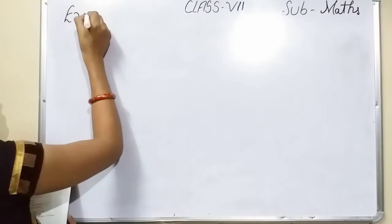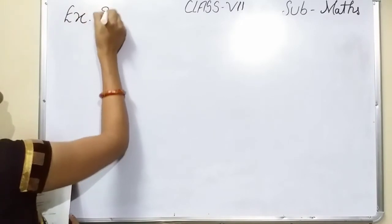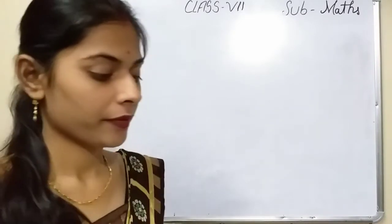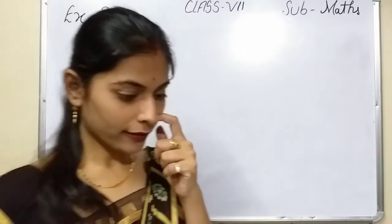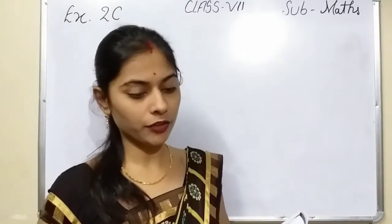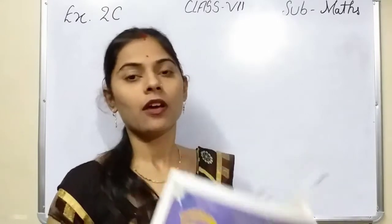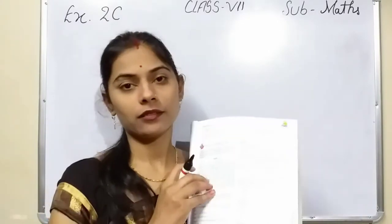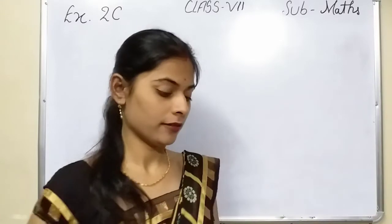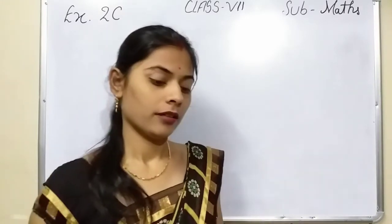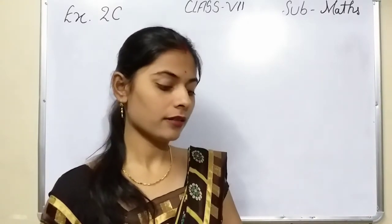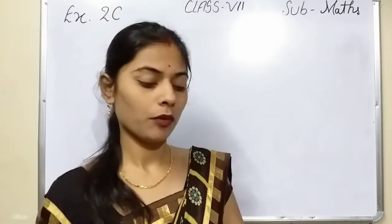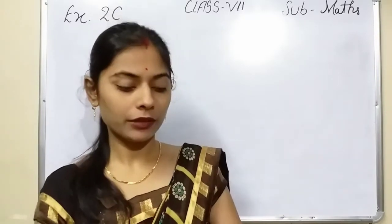Exercise 2C. Look at the number square given in table 2.1 and answer the following. For this you have to look at table 2.1. Question number one: list the multiples of 2 between 1 and 10, both inclusive.